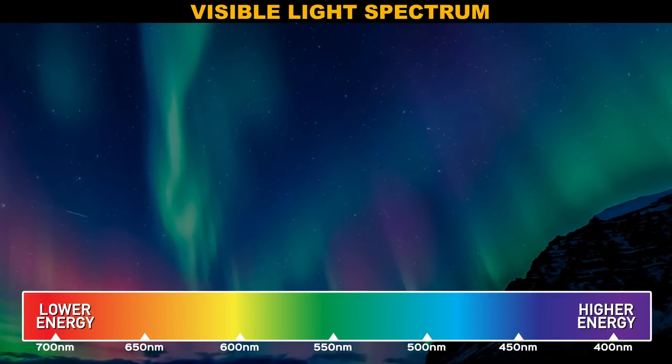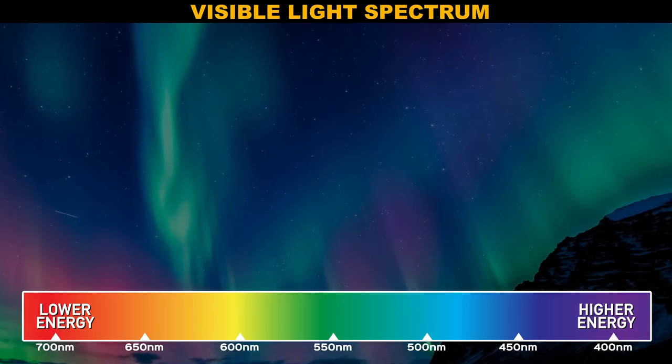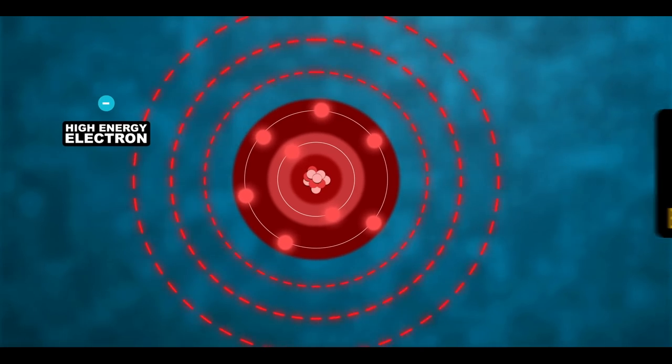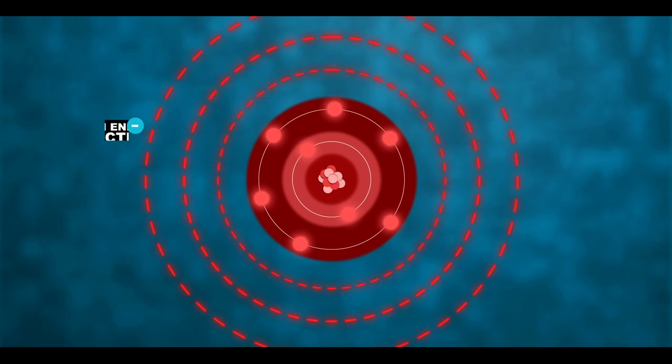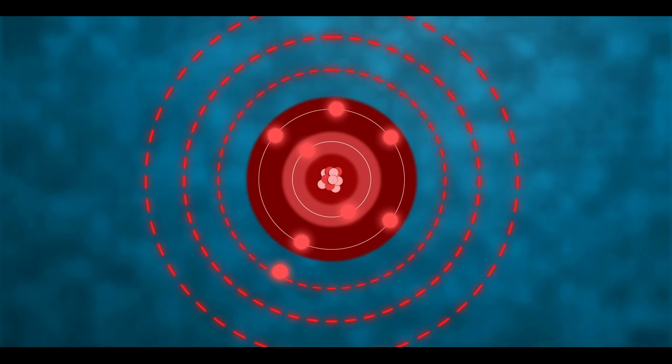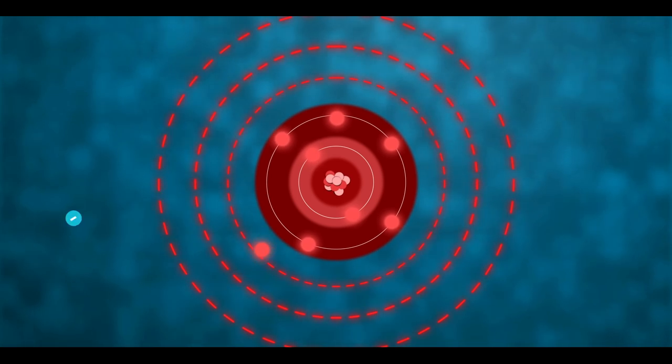Higher energy photons are greener, and lower energy photons are redder. Now, here's another fun fact about oxygen. It has multiple different excited states, so it can absorb electrons of different energies. If it absorbs a high energy electron, then a high energy photon is produced, aka green. If it absorbs a lower energy electron, then a lower energy photon is produced, aka red.